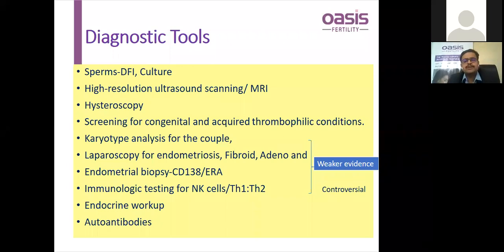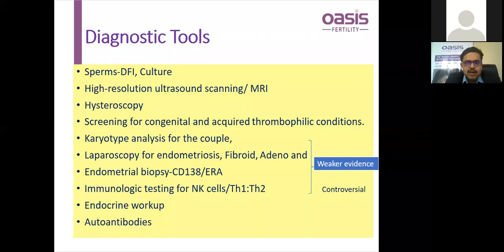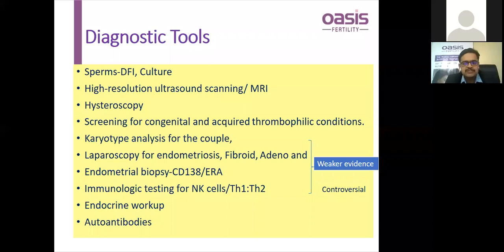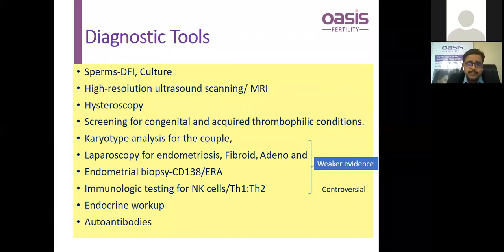Endometrial biopsy is an important aspect of treating RIF. Previously we did endometrial dating by Noyes criteria; now we use CD138 staining to detect chronic endometritis and perform the endometrial receptivity array (ERA) to detect the exact window of implantation for personalized embryo transfer. Immunological testing for both peripheral and uterine natural killer cells can guide treatments such as steroids or immunosuppressive agents. However, laparoscopy, endometrial biopsy, and immunological testing have weaker evidence and can be controversial.